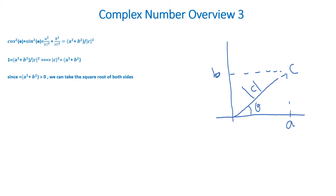Since a squared plus b squared is always positive, we can take the square root of both sides. The square root of c squared is equal to the square root of quantity a squared plus b squared, which reduces to the magnitude of c is equal to the square root of quantity a squared plus b squared.